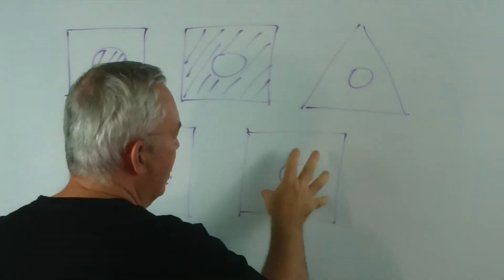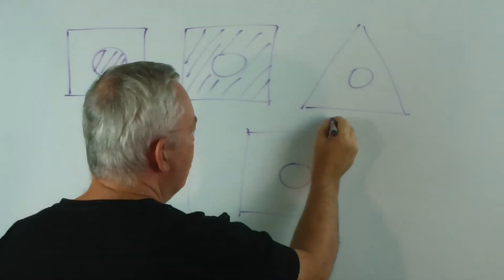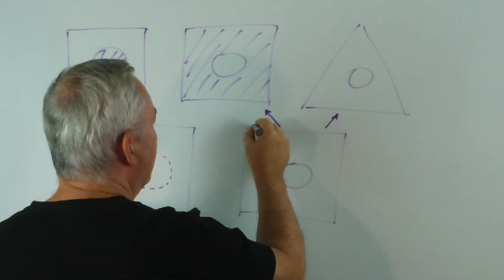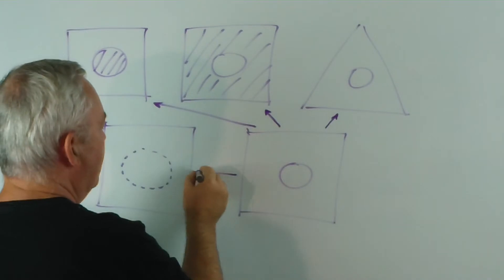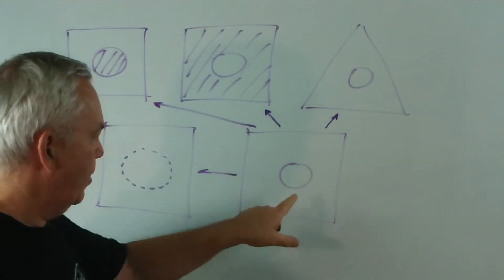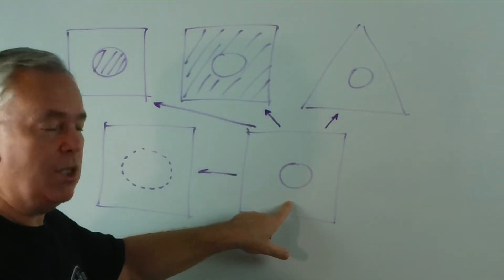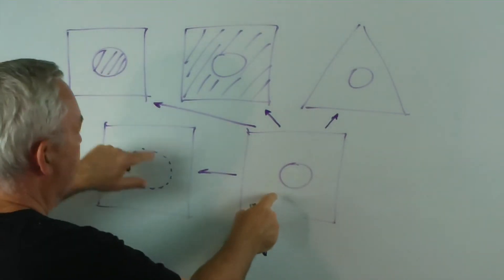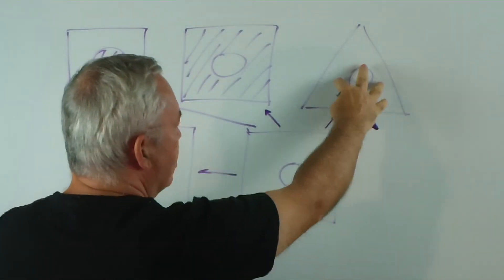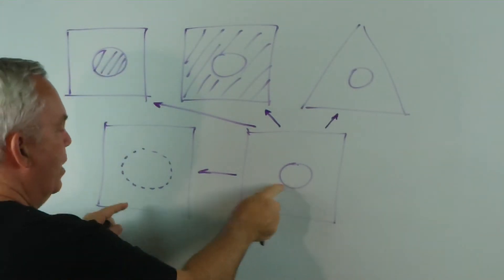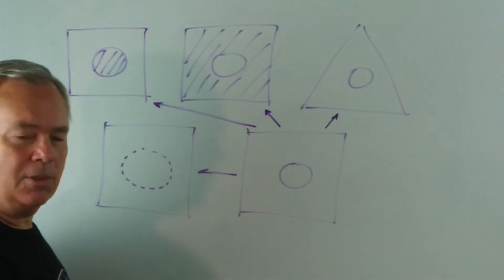One way of looking at it is to say that each one of these is only one step different from that one. We've only got to make one change. Here, for example, we shaded the circle. We shaded the square. We altered the outside shape to a triangle. Or we made the inside circle a dotted circle.